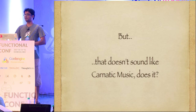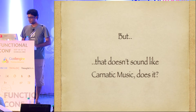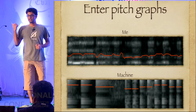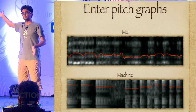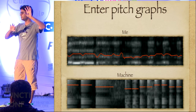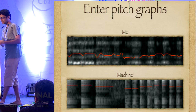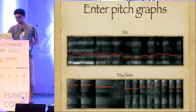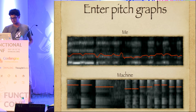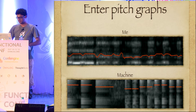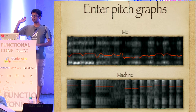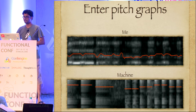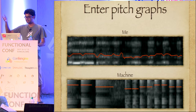What is different, in a way that we can all understand? These are pitch graphs - frequency versus time. At the top is me singing and at the bottom is the machine singing the exact same thing. You can visually see the differences. Here is me singing, and here's the machine singing the exact same thing. That's obviously not the same thing.